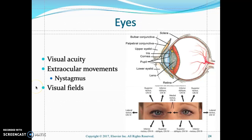Nystagmus is the involuntary oscillation of the eyes, resulting from injury. When you perform the H test, if the patient's eyes are oscillating or moving involuntarily, it indicates some type of damage to the eye muscles. Also check the patient's peripheral vision.